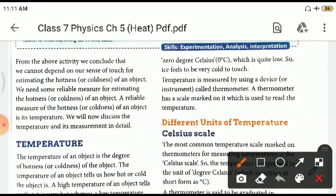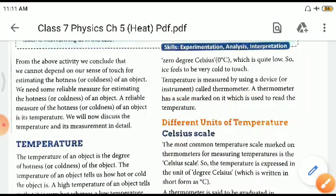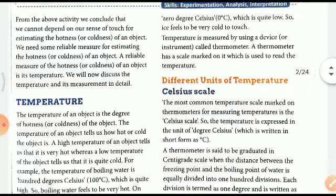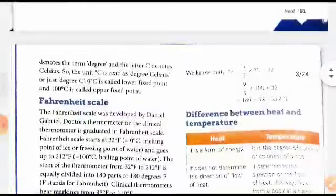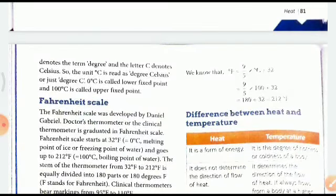Temperature is measured by a device called thermometer. The thermometer has a scale marked on it which is used to read the temperature. The units of temperature include the Celsius scale. In Celsius, or centigrade as we call it, each division is of one degree. In Celsius scale the lower fixed point is 0 degrees and the higher fixed point is 100 degrees.